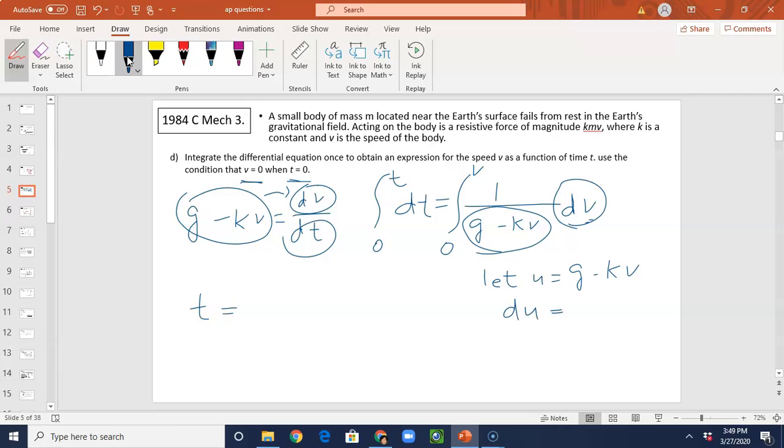Now what is DU? DU, G equals to zero, right? Minus K is constant. Just K DV. So we can solve for DV. DV is negative 1 over K DU. Now we're going to substitute here. On the left hand is T. On the right hand you integrate from zero to V, 1 over U times DV. DV is negative 1 over K DU.